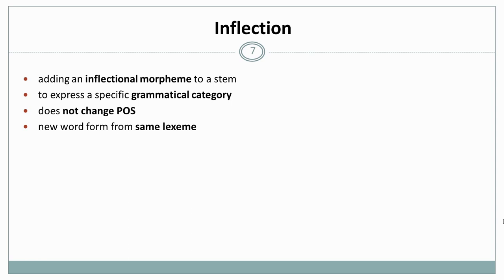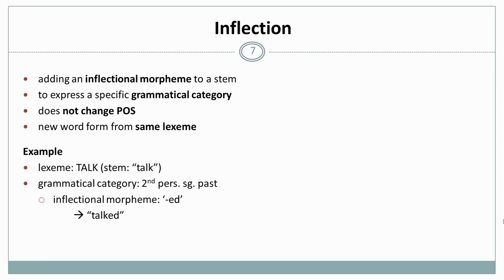And inflection does not change the part of speech. So what we end up with is a new word form from the same lexeme. So here's one example. We have the lexeme talk. Its stem in English is talk, and we want the grammatical category to be the second person singular past. And we look into our dictionary and see that the inflection morpheme for that is -ed. And then we just add -ed to the stem talk, and we end up with talked.